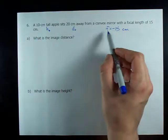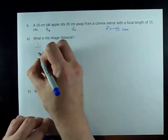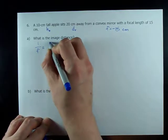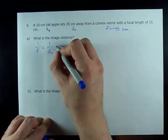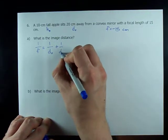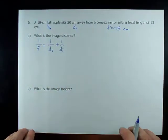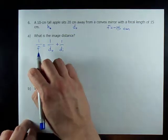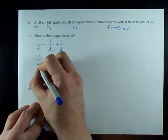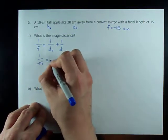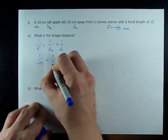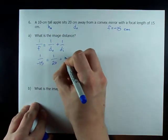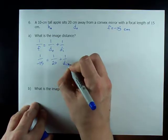Since I'm given d_o and F, I can use my regular mirror equation. 1 over F equals 1 over d_i plus 1 over d_o. F is negative 15, 1 over negative 15. d_o is 20 because I'm 20 centimeters away from my mirror, plus 1 over d_i.